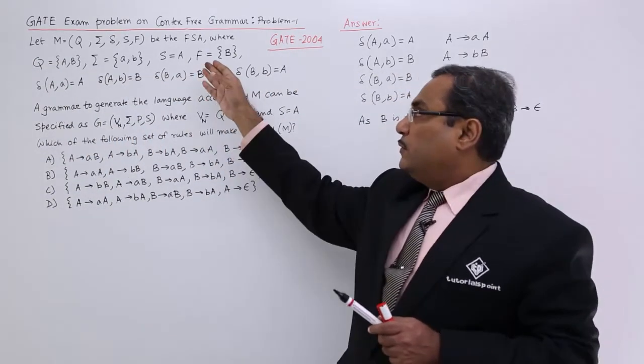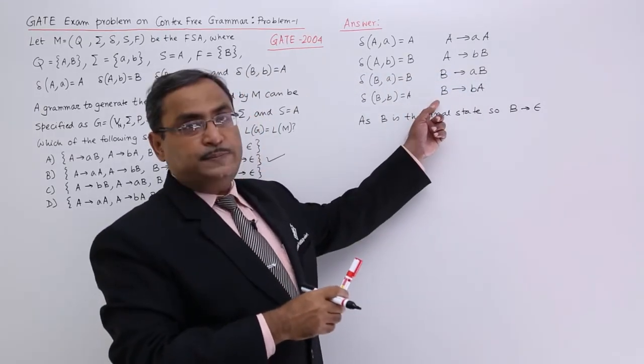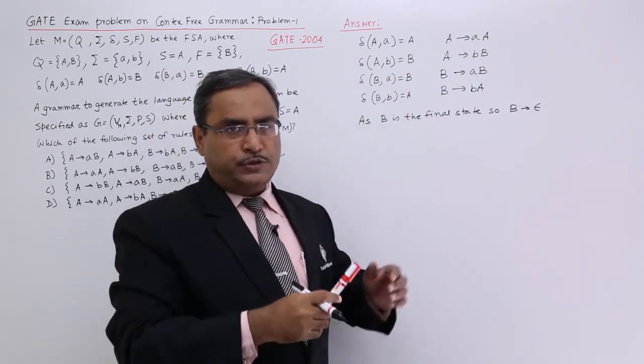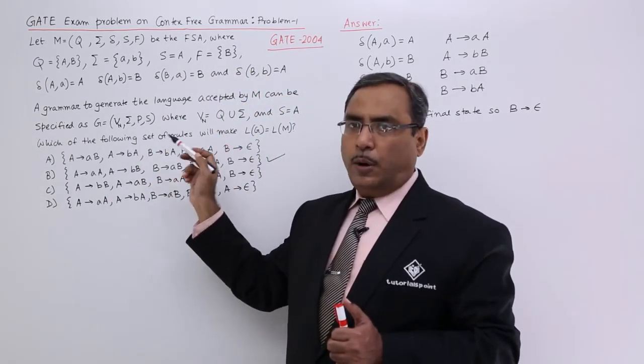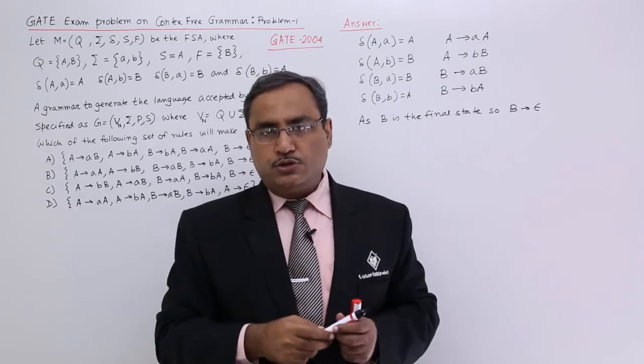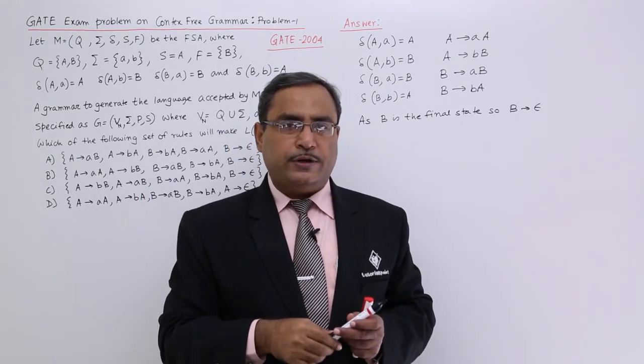In this way, from the given finite state automaton, deduce the respective grammar and the option is very simple. You should have to match which option is matching with our proposed grammar. In this way, such problems can be answered. Thanks for watching this video.